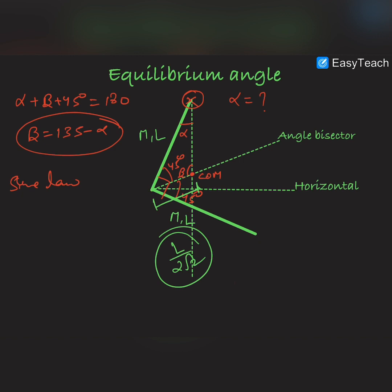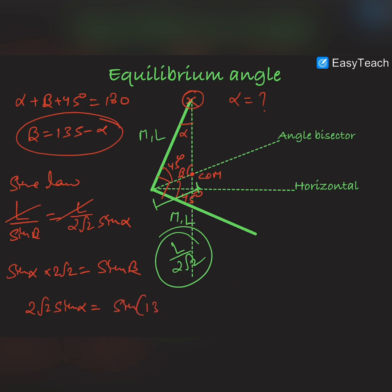Using the sine law: [l/(2√2)] / sin α = l / sin β. Cancelling l with l, we get 2√2 sin α = sin β. We know the value of beta is (135° − α), so 2√2 sin α = sin(135° − α). Opening this using the identity sin(A − B) = sin A cos B − cos A sin B, this gives 2√2 sin α = sin 135° cos α − cos 135° sin α.